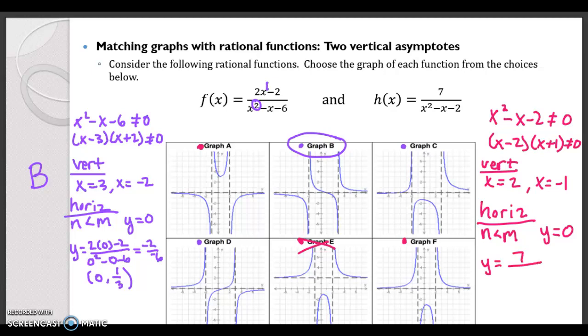So that's 7 over 0 squared minus 0 minus 2. So this is going to equal 7 over negative 2, which is a negative number.